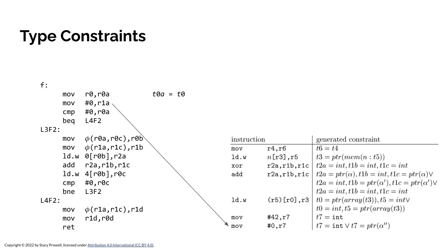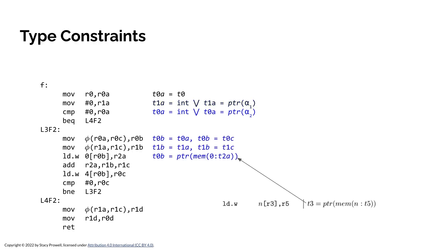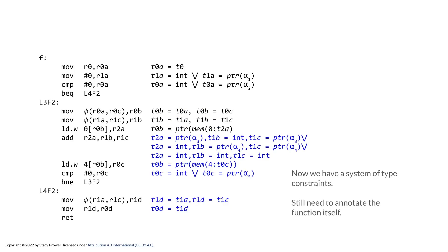We continue applying in the same model. For the next one, I'm moving a 0 in — and he takes the point of view that 0 could be an integer, a null, or a pointer. So I'm allowed to have that type be either an integer or a pointer to some as-yet-unknown type, which I'll call alpha-sub-1. The next one is the same thing except it could be a pointer to a different type, alpha-sub-2. Finally we get to the LDW — load word — and I have that pointer-to-memory-with-offset pattern. I know the offset is 0, so I fill that in and wind up with that line.